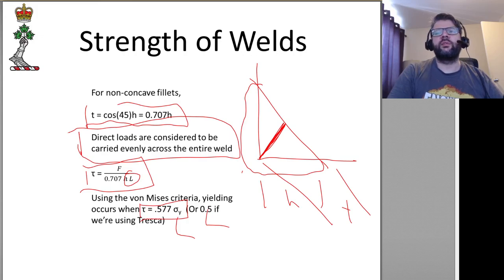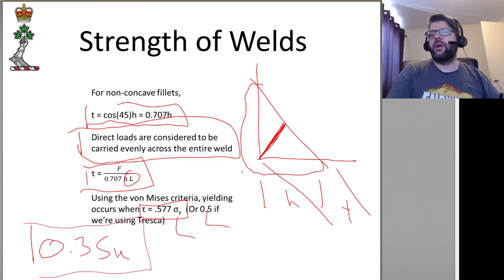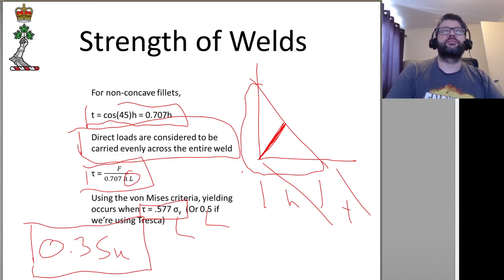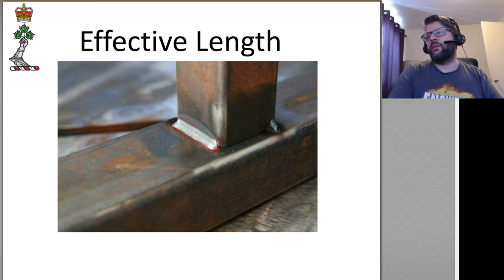Often the failure criterion is actually going to be 0.3 SU if we're designing to one of the codes recommended by the American Welding Society. Here's an example showing a bit more of how we have this tapering-down effect — it's a certain size for part of the length of the weld, and then when you get near the corners it tapers down.